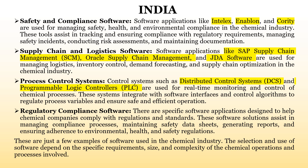The sixth one is supply chain and logistics management software. Software implemented here includes SAP Supply Chain Management, Oracle Supply Chain Management, and JDA. These are used to understand and manage inventory control, demand forecasting, how to optimize the supply chain, and managing logistics in chemical industries.